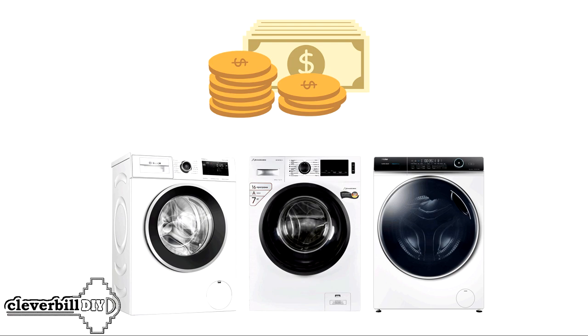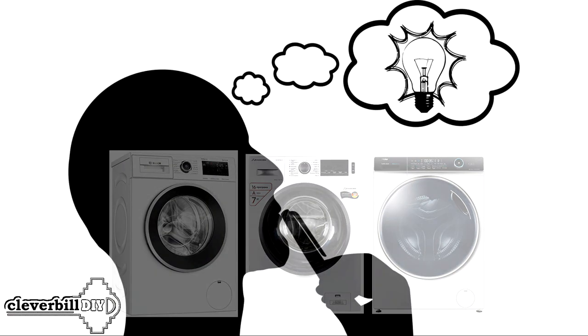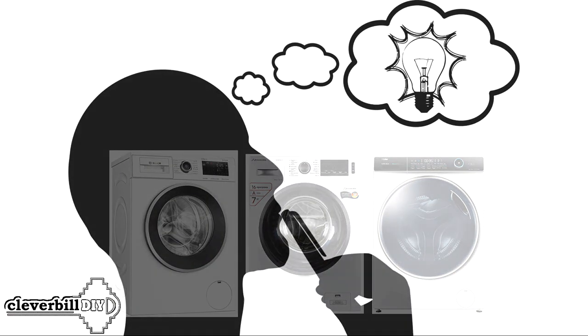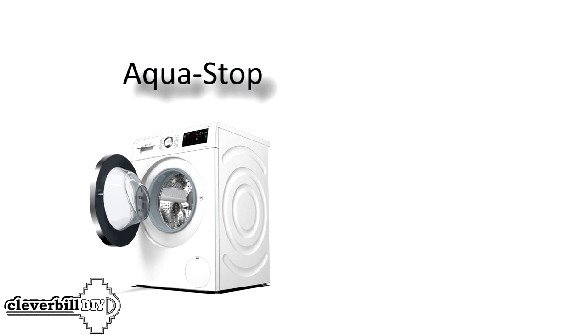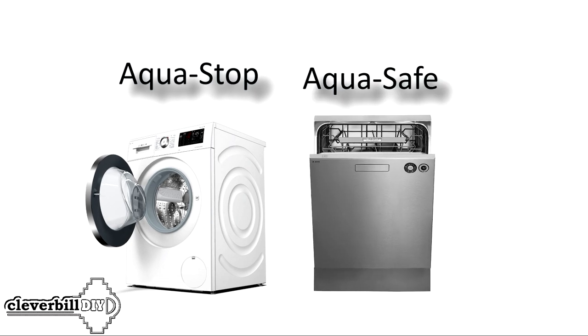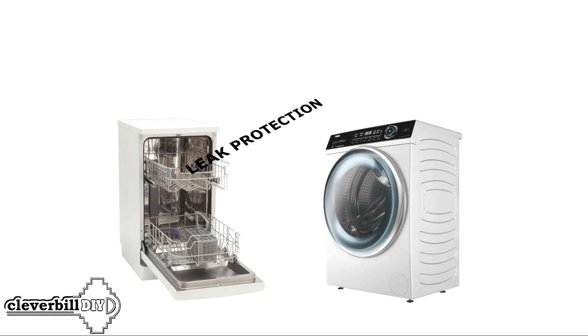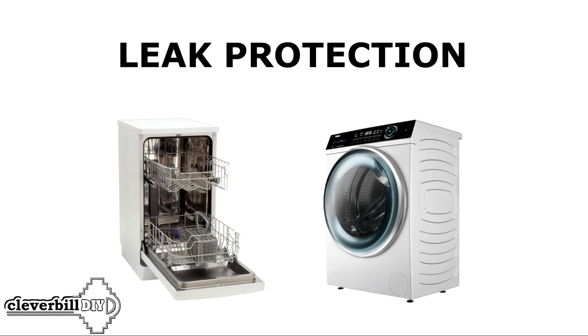Various manufacturers of washing machines and dishwashers use water leakage protection systems, and each manufacturer gives this system its own name. For example, Bosch or Siemens calls this system Aqua Stop, and the name Aqua Safe is used by Asko. Despite different names, the essence of the mechanism of action is not very different from each other.